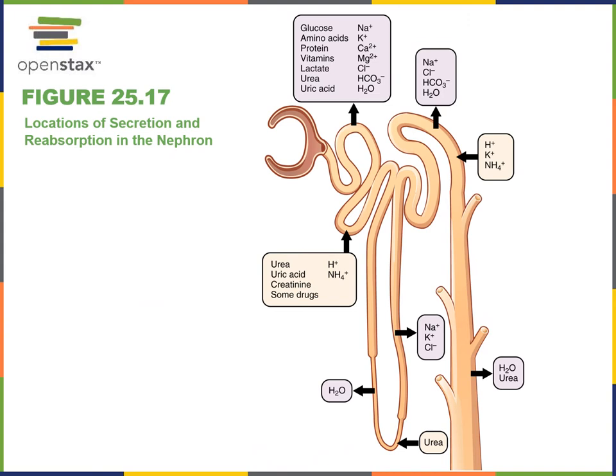This illustration shows us the locations of secretion and reabsorption in the nephron in order to regulate the composition of urine. Reabsorption — highlighted in green — is the movement of substances from filtrate back to the blood. Here at the proximal convoluted tubule, we have reabsorption of a large amount of water. 67% of the water that is filtered gets reabsorbed at the proximal convoluted tubule, as well as a large amount of the solutes in that water.